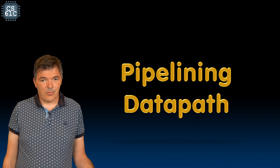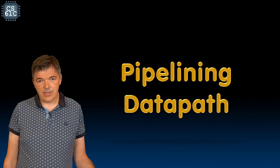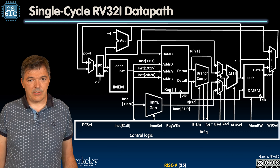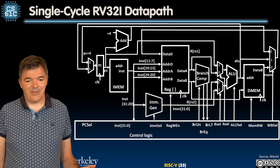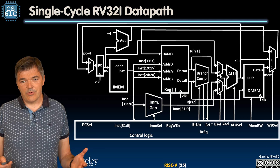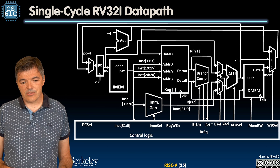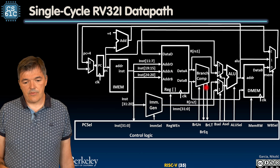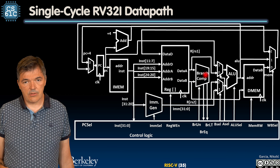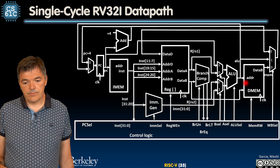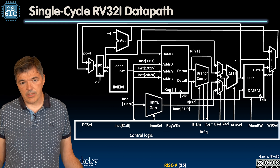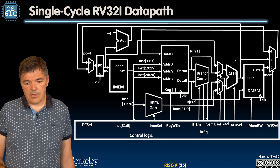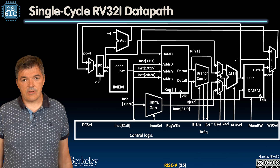Let's take a look at our single cycle data path that we are well familiar with and see how we should pipeline it. It has familiar blocks like the program counter, instruction memory, the PC plus 4 adder, immediate generation, register file, branch comparator, ALU, the data memory, and multiplexers that help configure the data path to execute a particular instruction. And of course there is control logic that configures the data path.